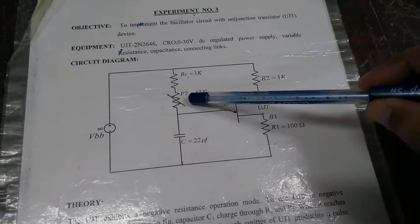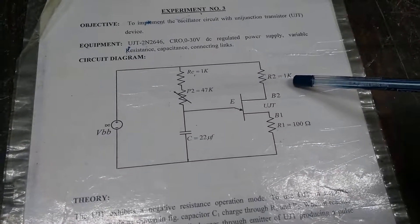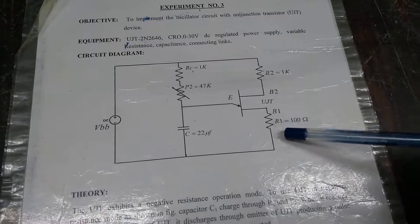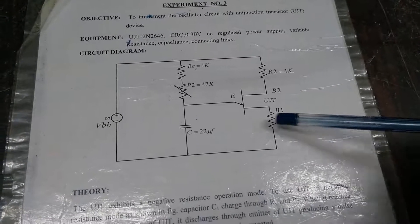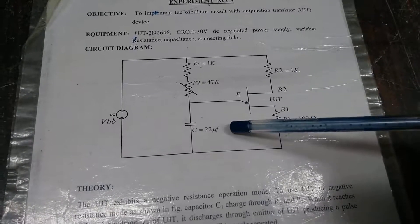Here it is a pot resistance, variable resistance connected with the 1 kilo ohm resistor. Here also at the base 2, 1 kilo ohm external resistor is connected, 100 ohm external resistance is connected, and this is the capacitor of 22 microfarads connected in this particular circuit.